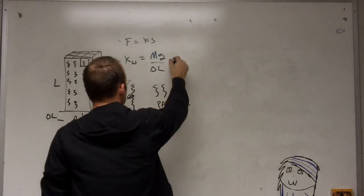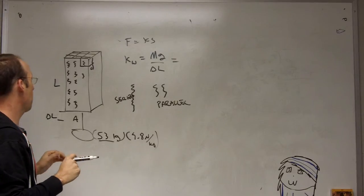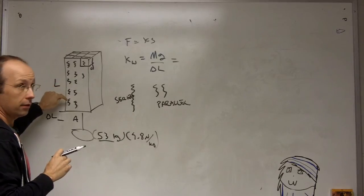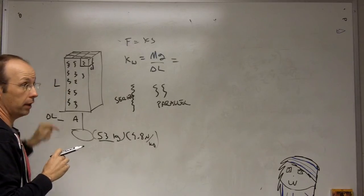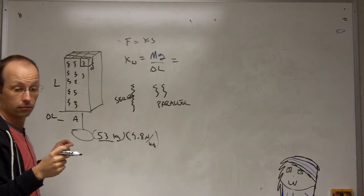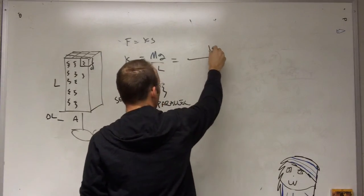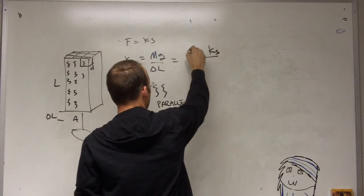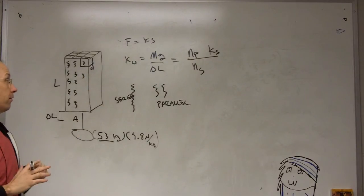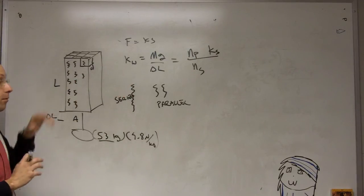So how can I relate this to the interatomic spring constant? Well, if I have the spring constant for every one that's in series, it's going to make it weaker. So if I had three in series, it would be a third as strong. So I'm going to write this: that Ks is the interatomic spring constant. This is the number of springs in series. And for every spring in parallel, it makes it stronger. So I have this number of springs in parallel divided by the number of springs in series for this particular thing.